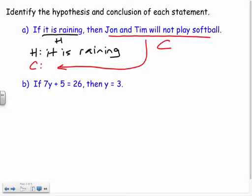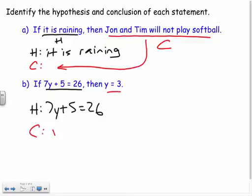For the next one, it says, if 7y plus 5 equals 26, then y equals 3. Well, I'm just stating the hypothesis and conclusion. So the hypothesis, same thing, it's the if part of it. 7y plus 5 equals 26, which means my conclusion is the then. The conclusion would be y equals 3. So pretty straightforward identifying the hypothesis and conclusion.